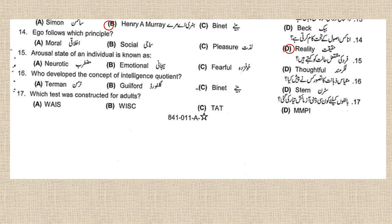Number fifteen: the arousal state of an individual is known as the emotional state. Number sixteen: who developed the concept of the Intelligence Quotient? William Stern gave the concept of the Intelligence Quotient.